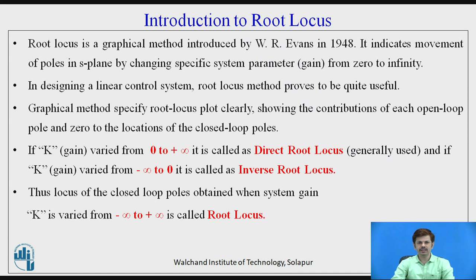In designing a linear control system, the root locus method proves to be quite useful. The graphical root locus plot clearly shows the contribution of each open loop pole and zero to the location of closed loop poles. If we change the value of K, called as gain, from 0 to plus infinity, it is called as direct root locus, which is generally used.